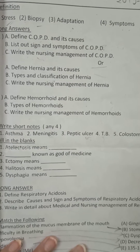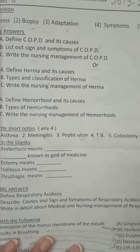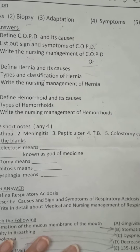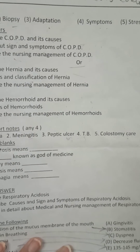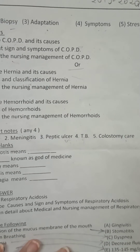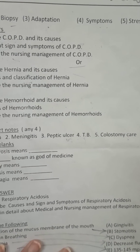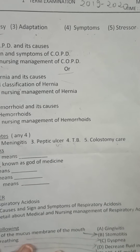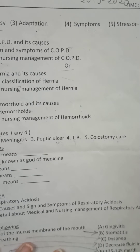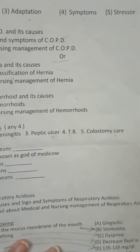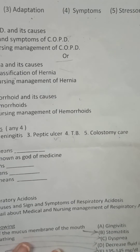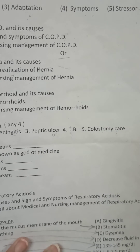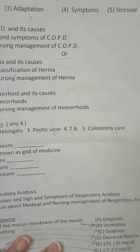Third short note: peptic ulcer — it is a stomach ulcer, a sore that occurs in the stomach lining. Fourth: tuberculosis, which we discussed in communicable diseases and the respiratory system. Fifth: colostomy care — write the full colostomy or stoma care.